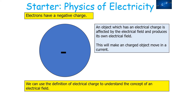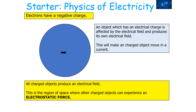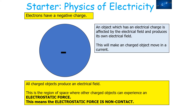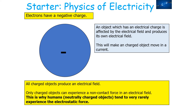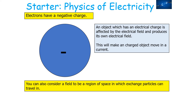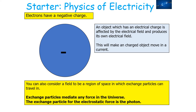We can use the definition of an electrical charge to understand the concept of an electrical field. A field is a region of space where an object can be affected by a non-contact force — a region where other charged objects can experience what we call an electrostatic force. This means the electrostatic force is in fact non-contact. Only charged objects can experience a non-contact force in an electrical field, which is why humans, who are normally neutrally charged, very rarely experience the electrostatic force. You can also consider a field as a region in which the exchange particle can travel. The exchange particles mediate any force in the universe, and the exchange particle needed for the electrostatic force is the photon.